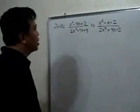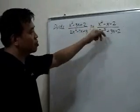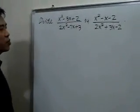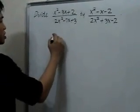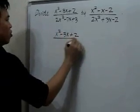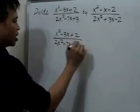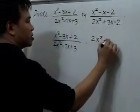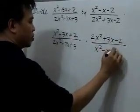We'll have this times the reciprocal of (x²-x-2)/(2x²+3x-2), and write this same problem as (x²-3x+2)/(2x²-7x+3) times (2x²+3x-2)/(x²-x-2).